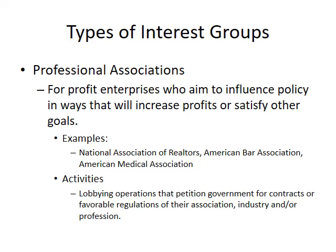The next type of group is professional organizations — for-profit enterprises who aim to influence policy in ways that will increase profits or satisfy other goals. Examples include the National Association of Realtors, the American Bar Association, and the American Medical Association. Their activities include lobbying operations that petition government for favorable regulations of their association, industry, or profession.